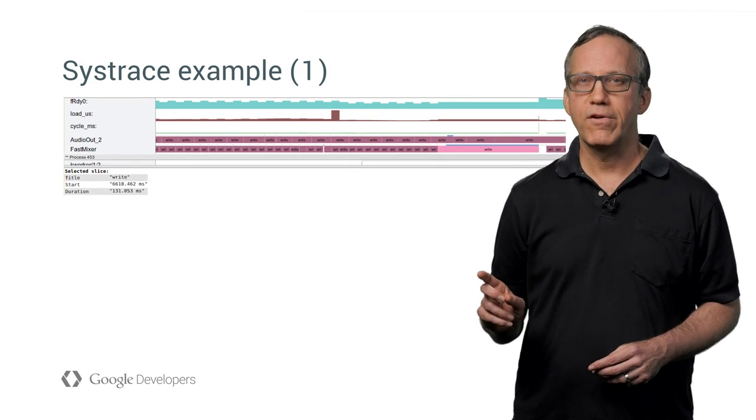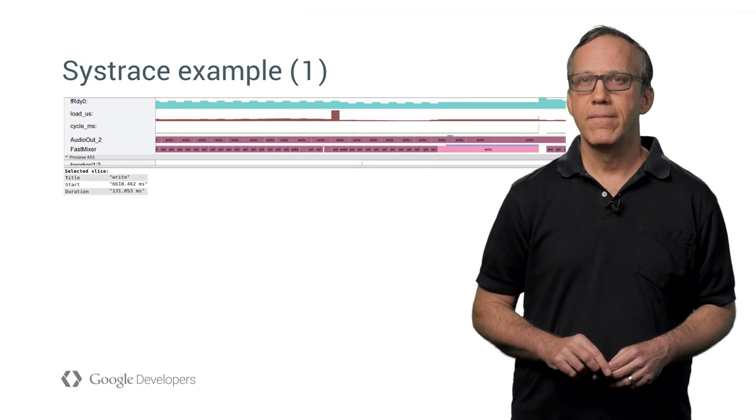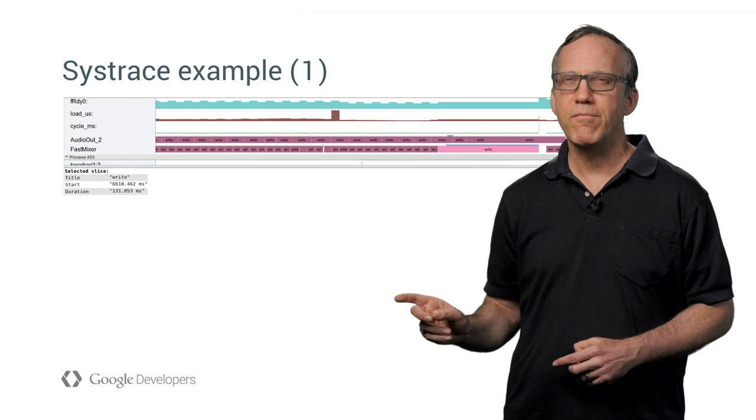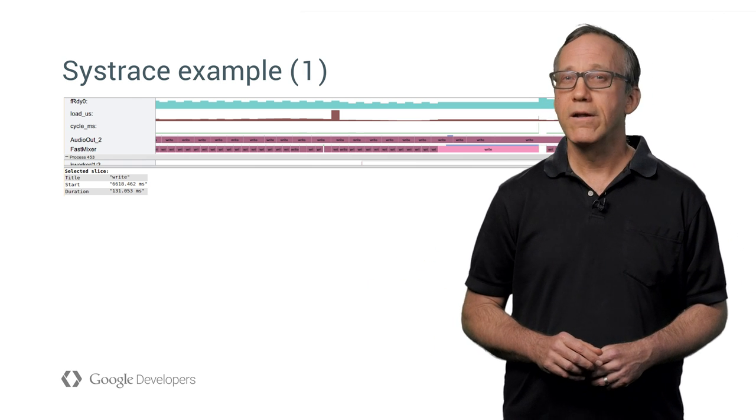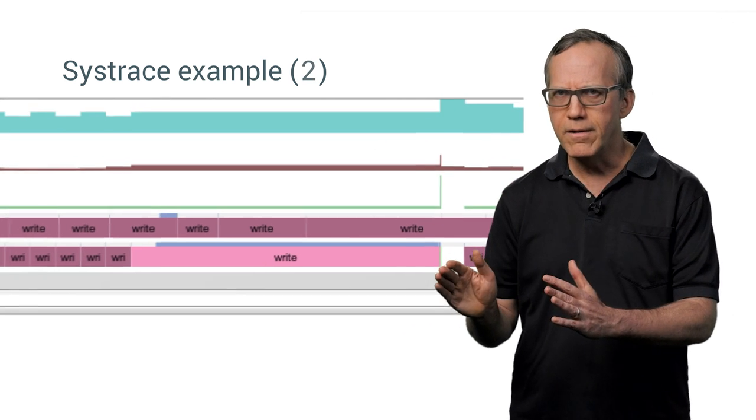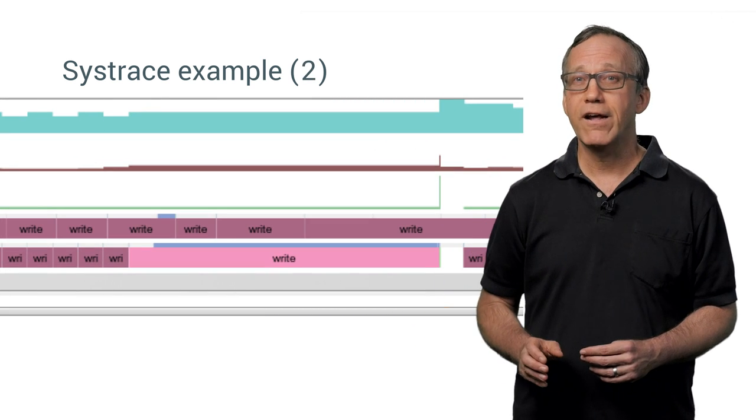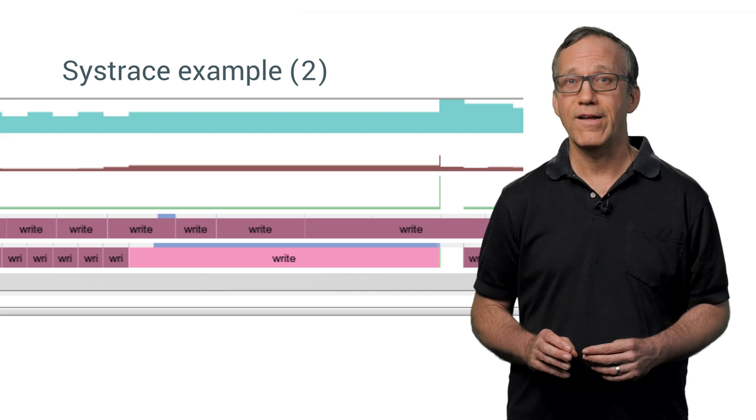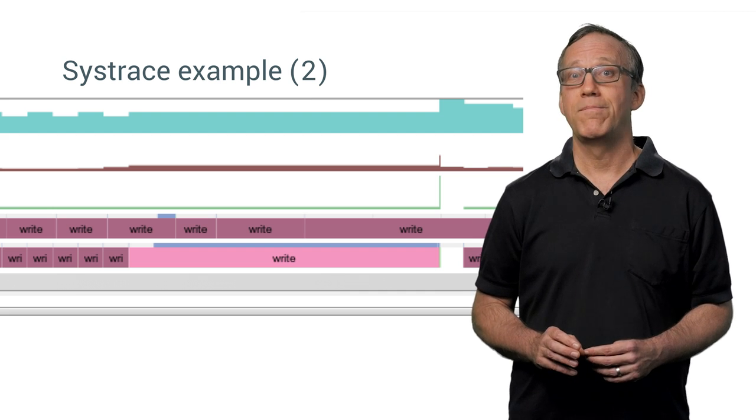We use a tool called Systrace to visualize this. Here's a real example of a preemption latency bug. The audio writes should be regular, like our cars. But, zooming in, we see that one audio write actually took 130 milliseconds to complete. That's a pop for sure.